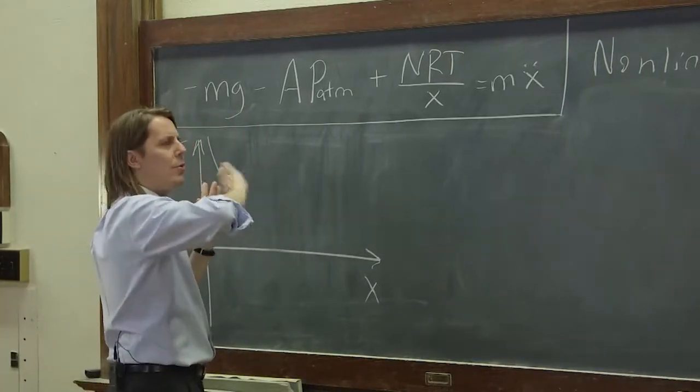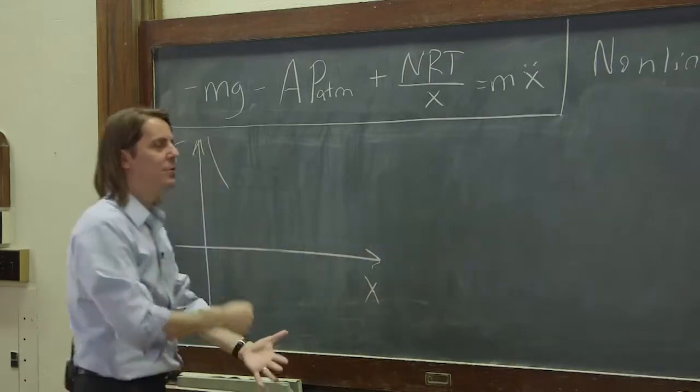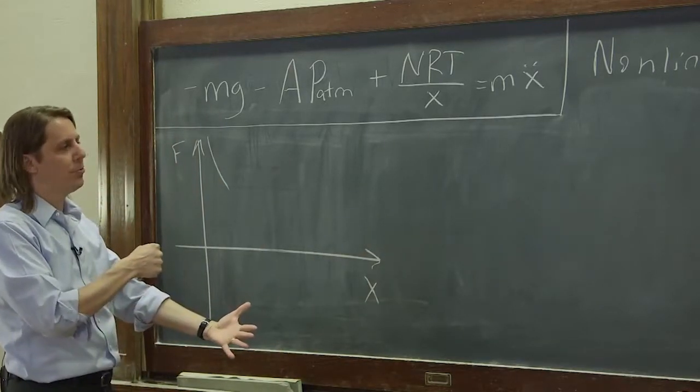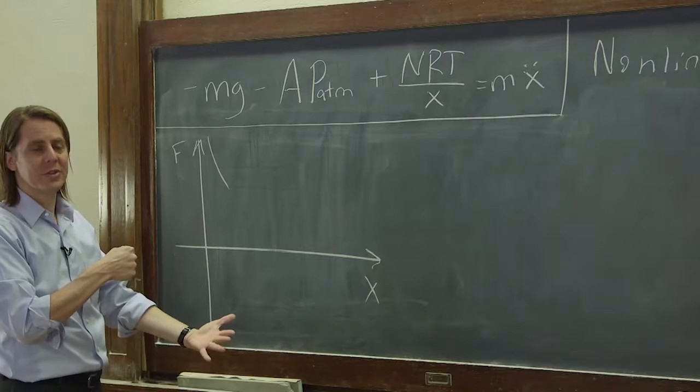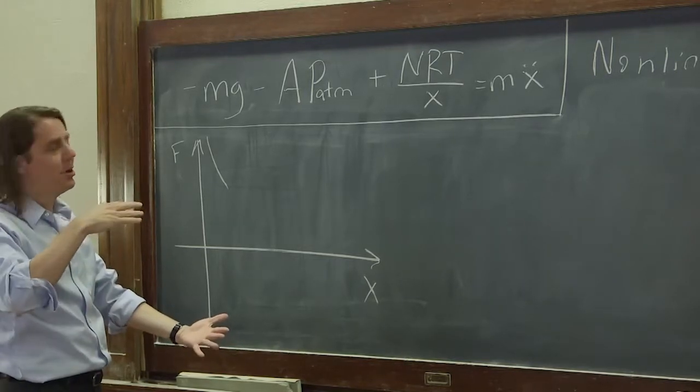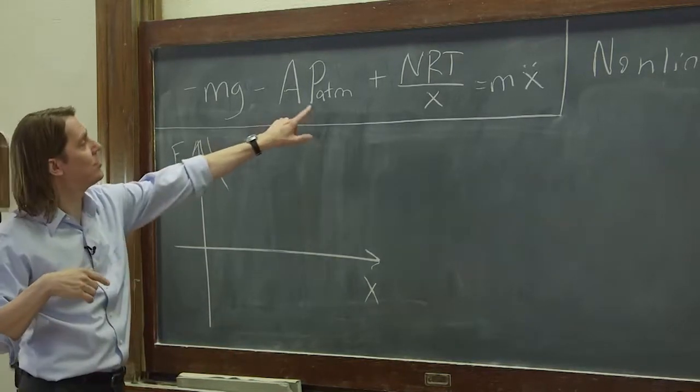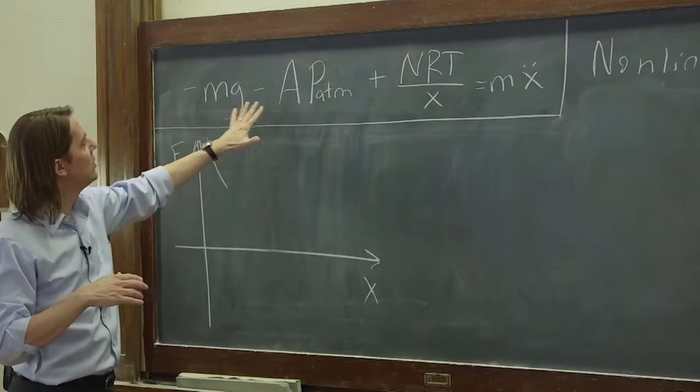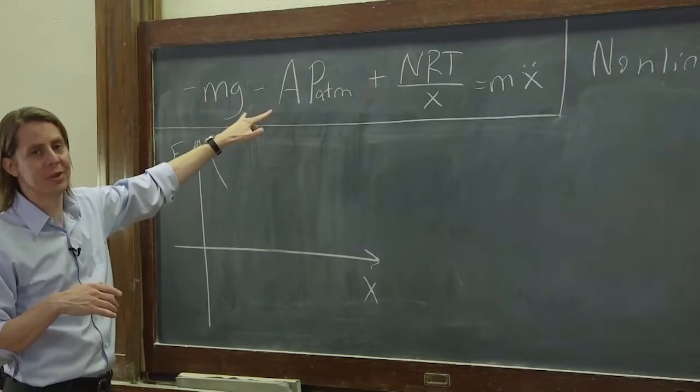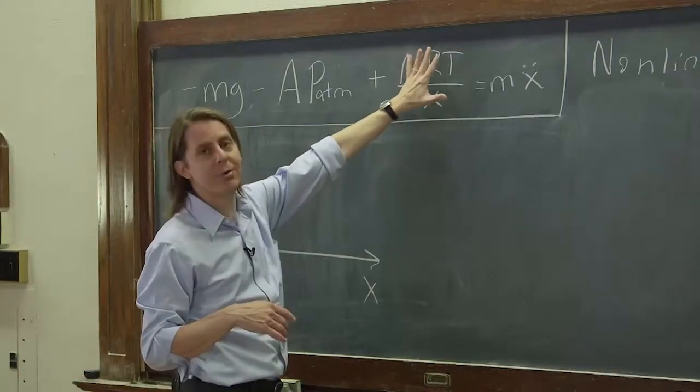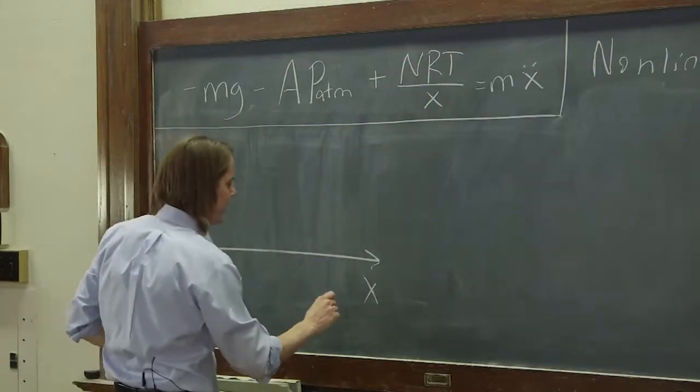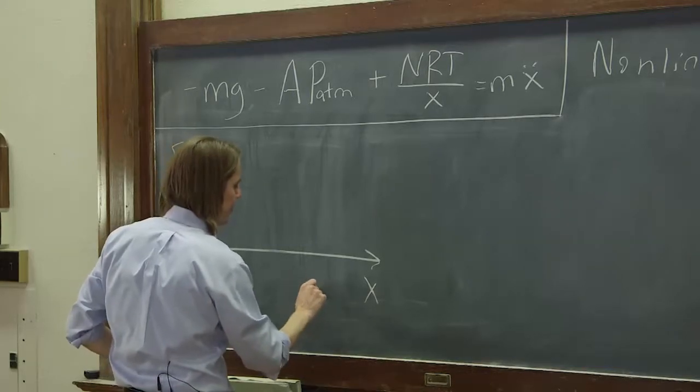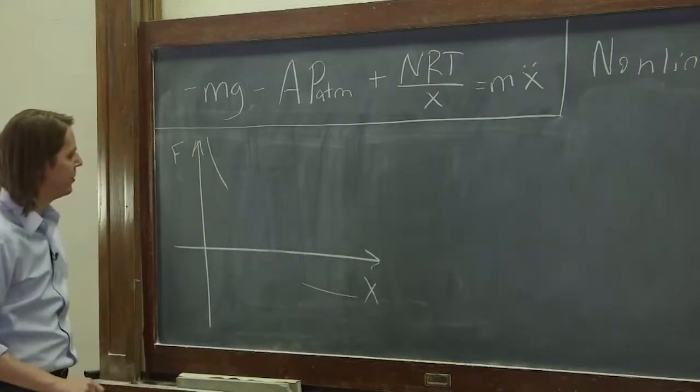When you go really far out to large x, that means you've pulled it back, and you've pulled it back so far you're pulling a vacuum. And you essentially just get a negative pressure pushing down. You get atmospheric pressure pushing down plus gravity. You basically, at large x, reach just the sum of those two forces pushing down, because this, for large x, becomes zero. So we know that it's going to end up out here at some approaching constant negative value.